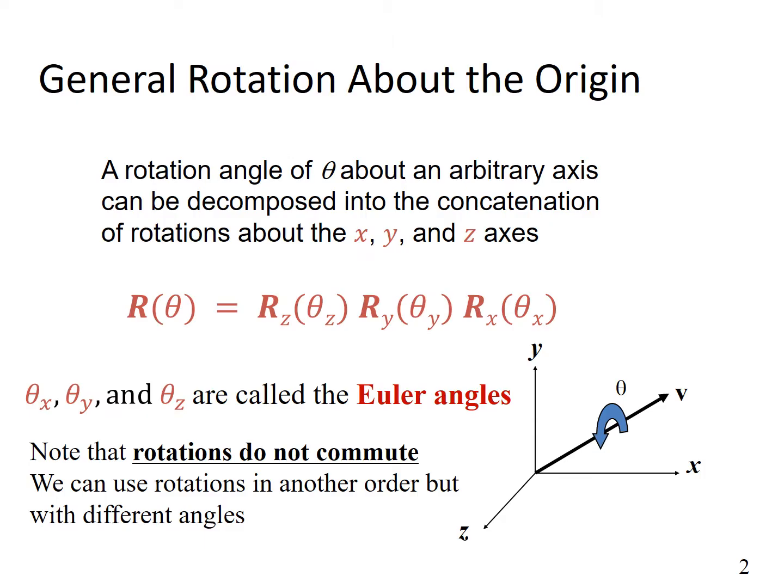General rotation about the origin is simple. If you want to achieve rotation about an arbitrary vector but still about the origin, all you need to do is perform rotations about the individual x-axis, y-axis and z-axis, then concatenate these rotations by multiplying the 4 by 4 transformation matrices to get your arbitrary transformation matrix.